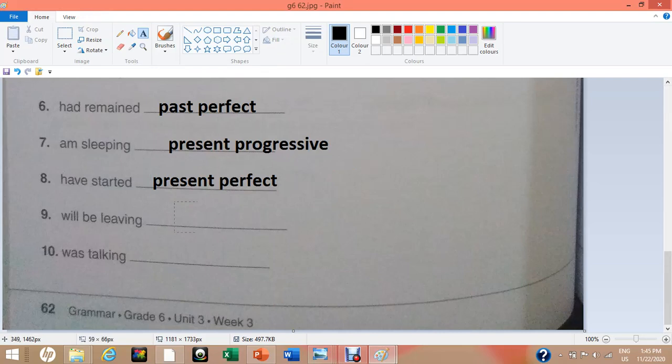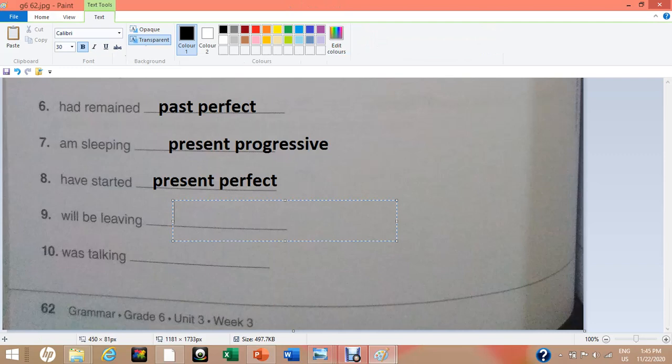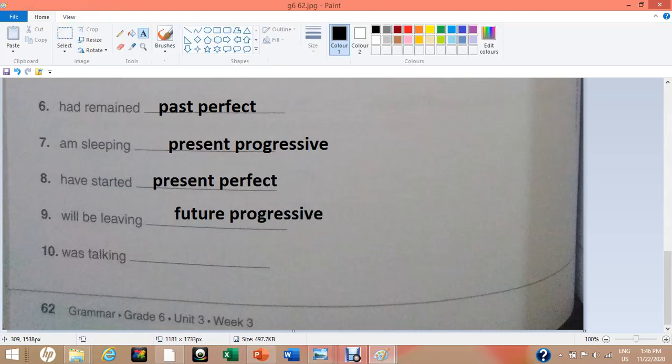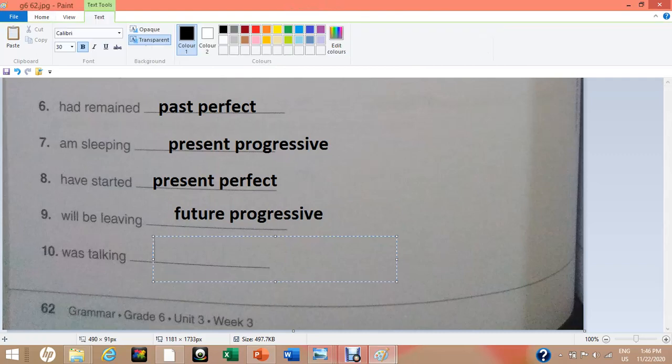Number nine, will be living. This verb phrase will be included in the category of future progressive. And the last one was talking. This will go to the tense of past progressive.